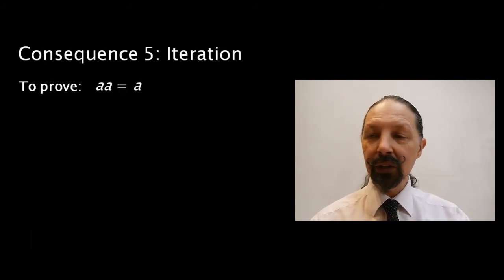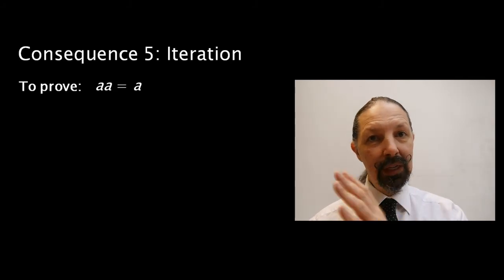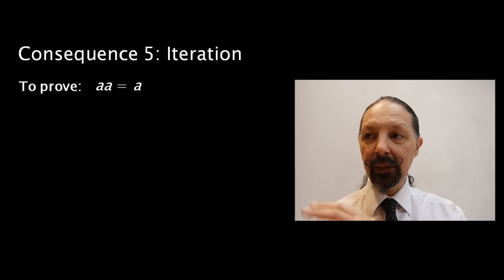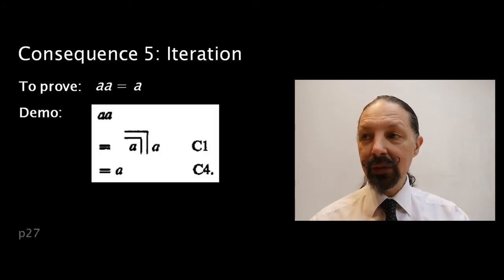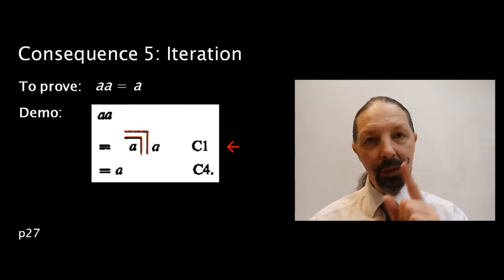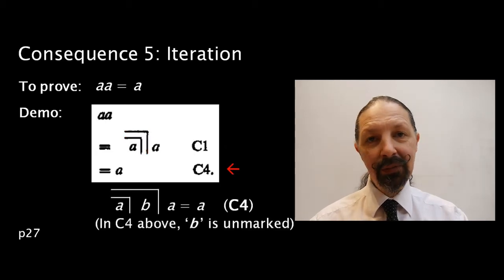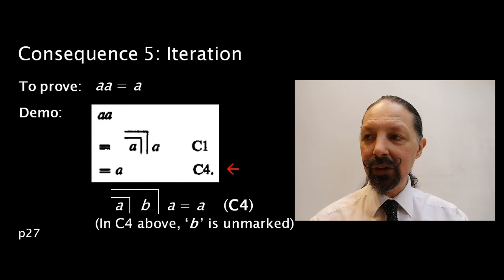Consequence five, iteration, just says what we already know, that mark mark equals mark, A A equals A. But here's the proof. And this is an interesting one. It's not patently obvious, so let me talk you through it. First of all, we put mark over mark in between the two A's. What does that allow us to do? Well, remember C4 that we've just come across?